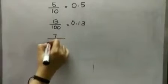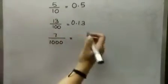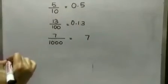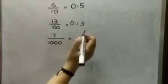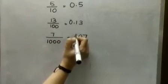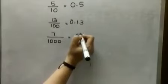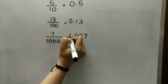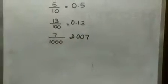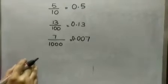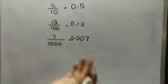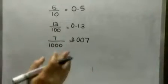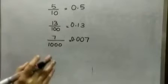7 by 1000. Now the decimal will shift 3 places from right to left. We are having only 1 digit, but we have to shift the decimal 3 places, so we will put zeros — 2 zeros. Your answer is 0.007. Any fraction having a denominator as 10, 100, 1000, or as a power of 10 can easily be represented in decimal form.